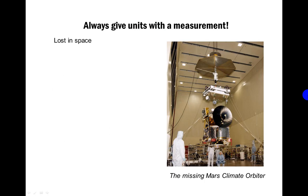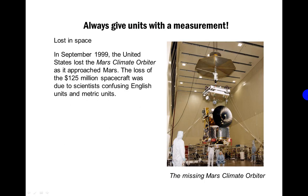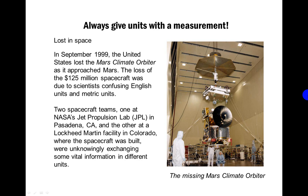Here's an example: the missing Mars Climate Orbiter was lost in space. In September 1999, the United States lost the Mars Climate Orbiter as it approached Mars. The loss of the $125 million spacecraft was due to scientists confusing English units and metric units. Two spacecraft teams — one at NASA's Jet Propulsion Lab in Pasadena, California, and the other at a Lockheed Martin facility in Colorado where the spacecraft was built — were unknowingly exchanging vital information in different units.